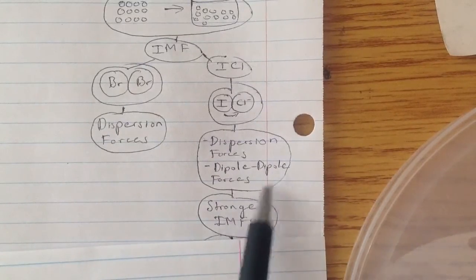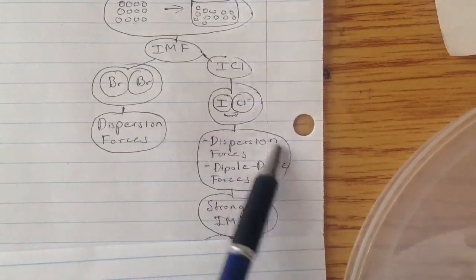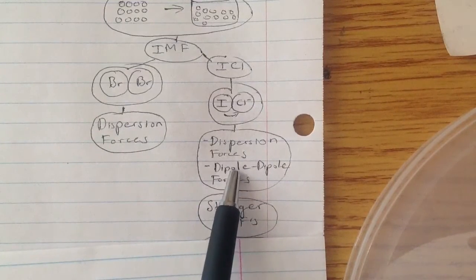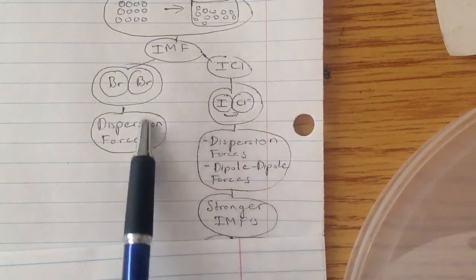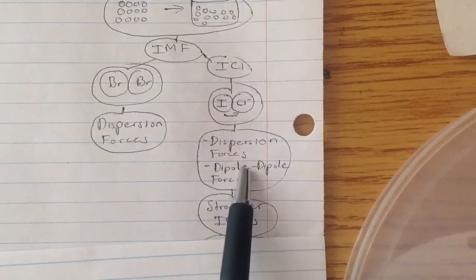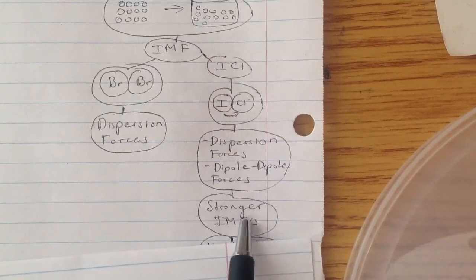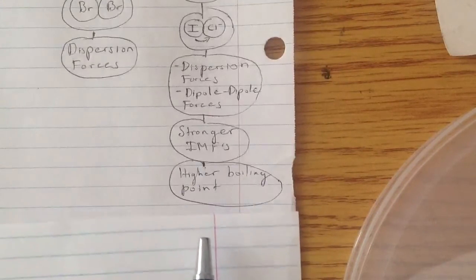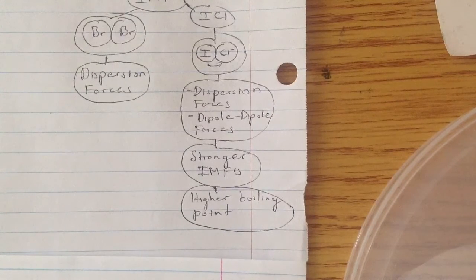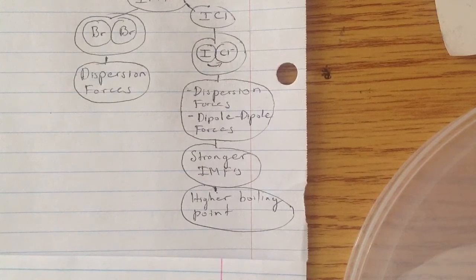So it has a stronger intermolecular force, because there's two, while Br2 only has one. Since their molar mass is the same, the dispersion forces are exactly the same. But there's one more force, which causes ICl to be stronger. And a stronger intermolecular force means it has a higher boiling point. Because the more strength it has, the less likely it's going to break, and the more energy needed to finally break it.